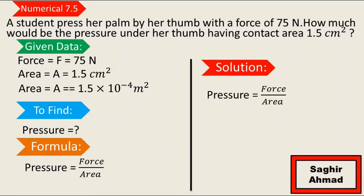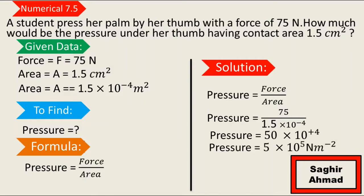Now we come to the solution. The formula of pressure is force over area. Force is 75 and area is 1.5 multiply by 10⁻⁴. When we divide 75 by 1.5, we get 50. So the pressure is 5 × 10⁵ Pascals.